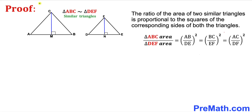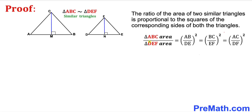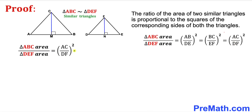Here's our final step — let me show you the proof for this theorem: the ratio of the areas of two similar triangles is proportional to the squares of the corresponding sides. We know triangles ABC and DEF are similar. I'll show just one proof: that the ratio of area of ABC to area of DEF equals the square of AC divided by DF, and the rest you can extrapolate yourself.